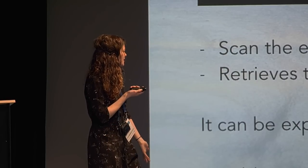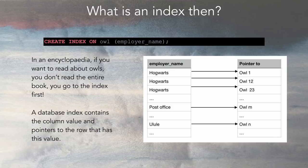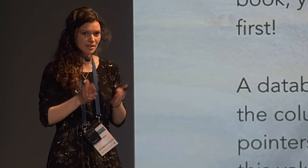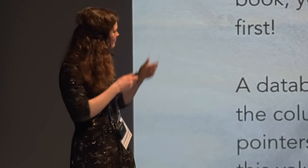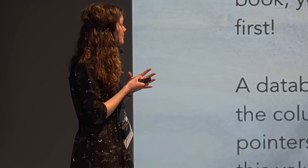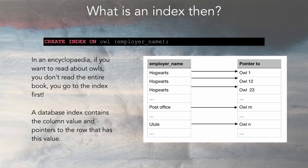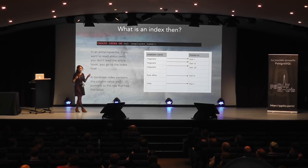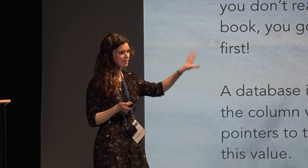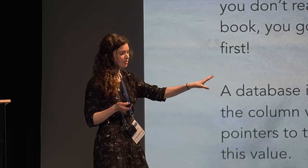So you might need an index. What is an index? Think of it like an encyclopedia — you go to the index, find 'owls,' and it shows you which pages contain it. A database index works the same way: it contains the value and a pointer to the row. The big difference from a book index is that a database index has the same number of values as rows in your table — unless you're using a GIN index.